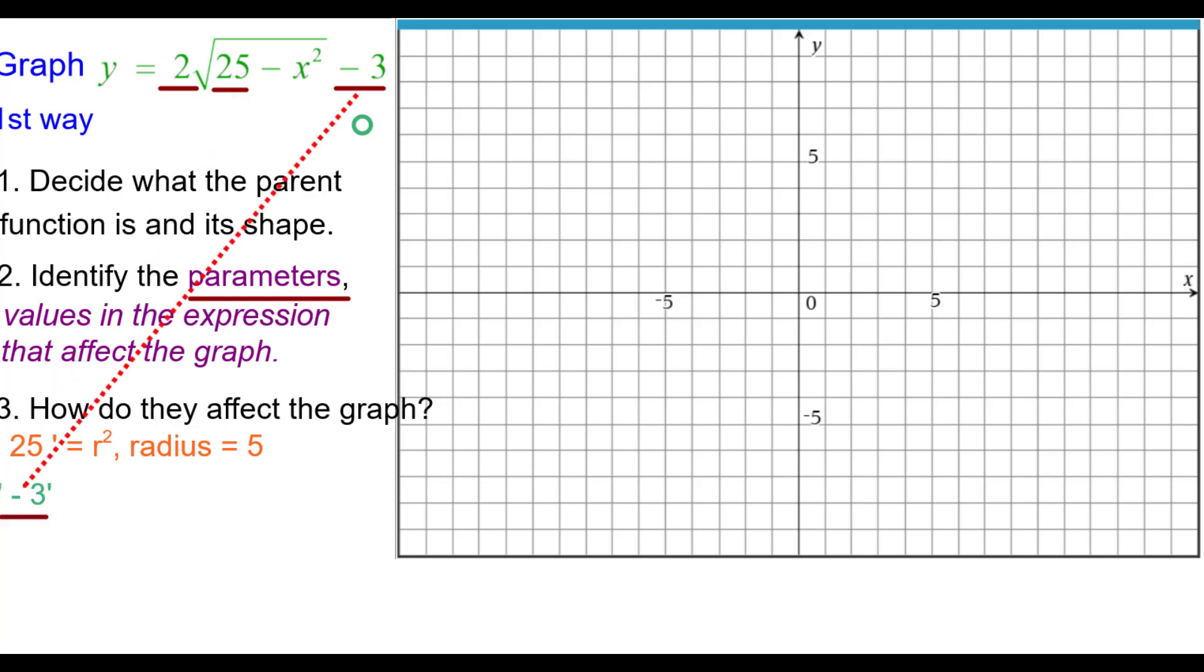The minus 3 outside the function shifts all points down 3, including the center, which is now going to be at 0, negative 3. So let's go ahead and plot that because we're going to plot points relative to that center.